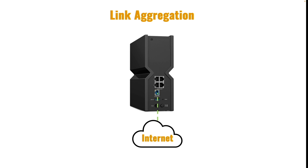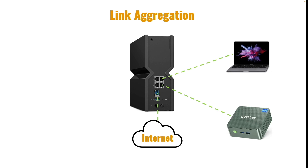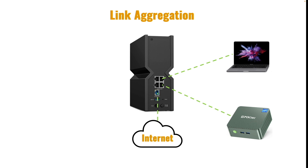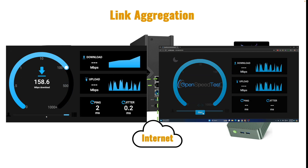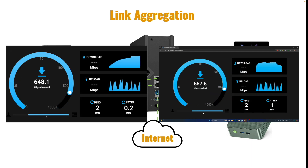Once OpenSpeedTest is installed, I'll run a baseline speed test using two clients connected to my TP-Link BE9300 router. My DS224 Plus is also connected to the router with both LAN ports connected but without link aggregation configured. Now I'll connect to the OpenSpeedTest container through a web browser on both clients and run a speed test on both systems at the same time.